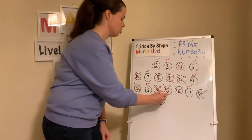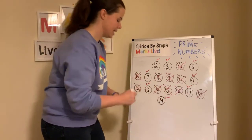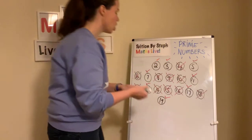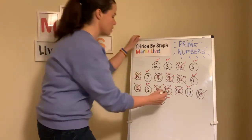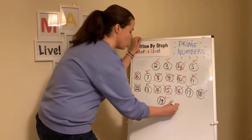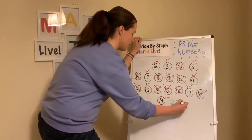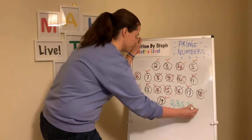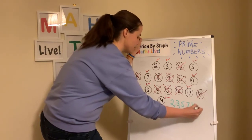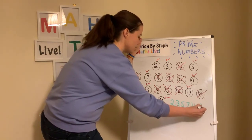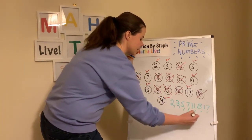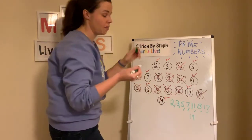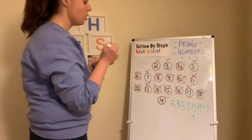And so is nineteen. So the prime numbers up to nineteen are: two, three, five, seven, eleven, thirteen, seventeen, and nineteen. Well done if you got those — just working through it is absolutely fine.